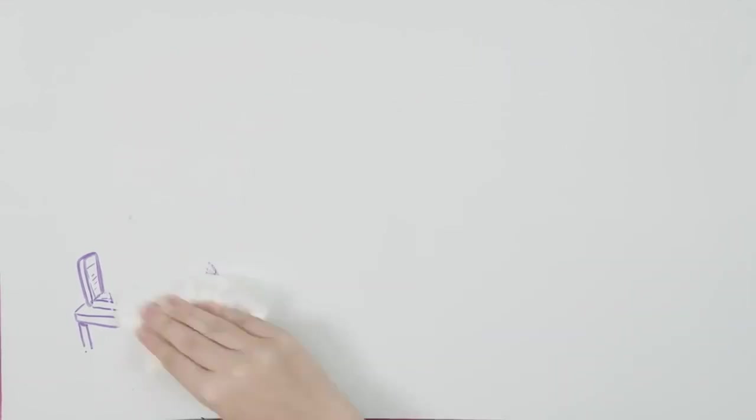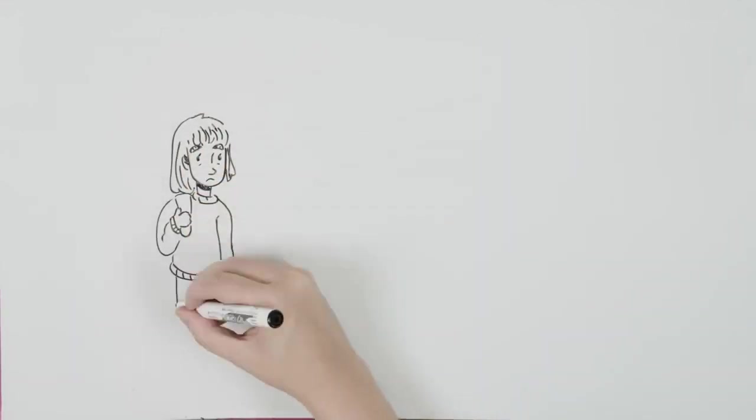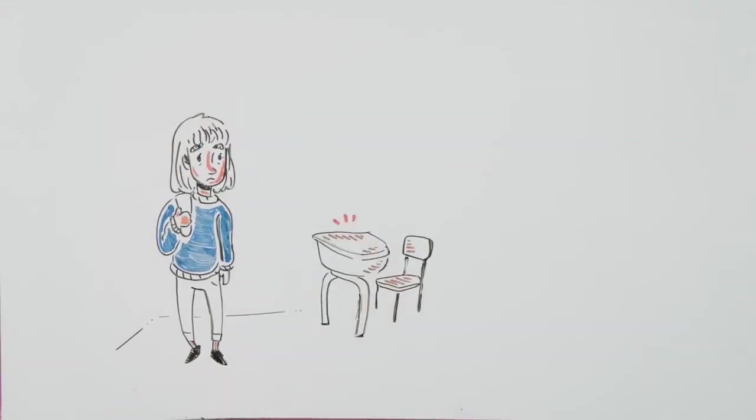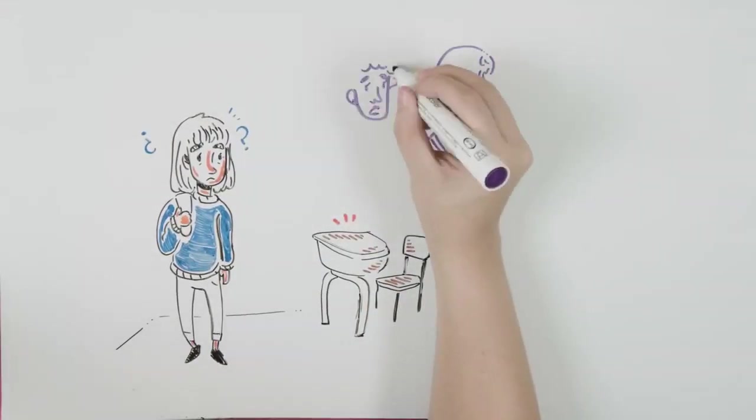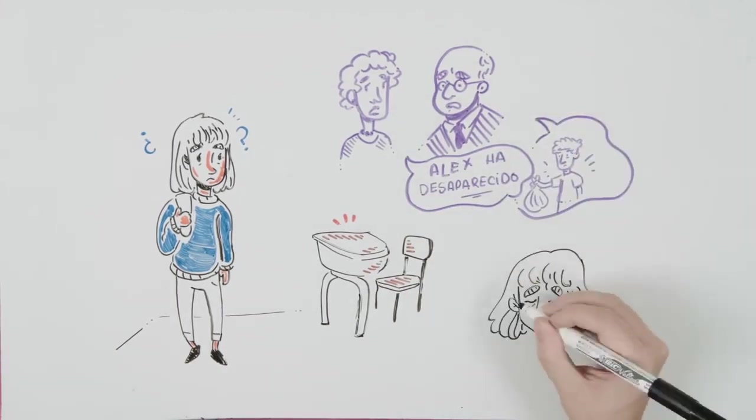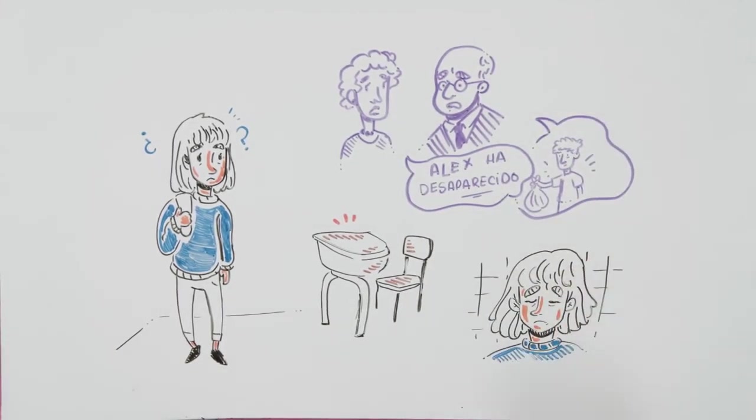The next day I got to class, but Alex was not there. Would she have overslept? Then the teacher entered with the director. They looked at us seriously, and she said in a broken voice that Alex had disappeared. They told us that when she got home, Alex put the trash out and never came back.